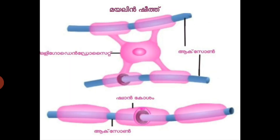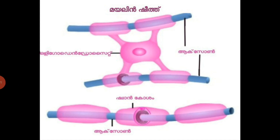Now let us see what is the difference between myelin sheath made of Schwann cells and that of oligodendrocytes. Here you can see two types of myelinated nerve cells — one made of Schwann cells and the other made of oligodendrocytes. Schwann cells cover only one axon or different parts of the same axon, but an oligodendrocyte can cover different axons or different parts of the same axon at a time. The second difference is that myelin sheath made of Schwann cells is seen in nerves, but the brain and spinal cord are myelinated with oligodendrocytes.